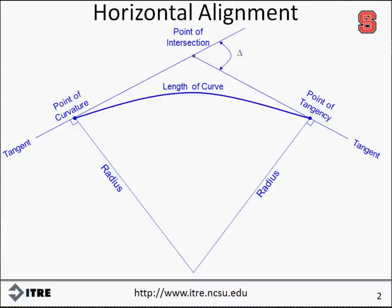Therefore, a spiral transition is used in some instances to help make the shift from a tangent to a curve a little smoother.